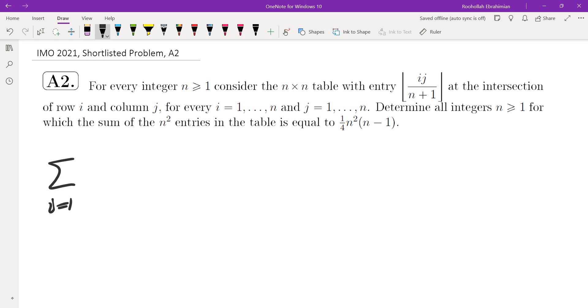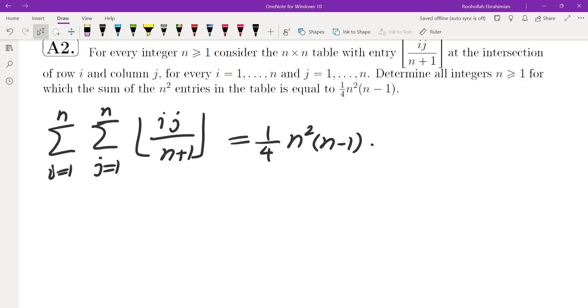It tells us that the sum i equals 1 to n, the sum j equals 1 to n, floor of ij over n plus 1, must be equal to 1 fourth n squared times n minus 1. In the beginning, I thought maybe I'll have to figure out when the right-hand side is an integer, but then I decided against that. Let's just first evaluate the sum on the left, and then we'll figure out when it's an integer. The first thing that I tried was evaluating the sum using techniques of evaluations of sums.